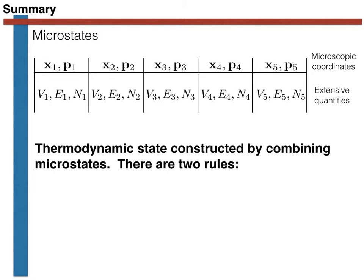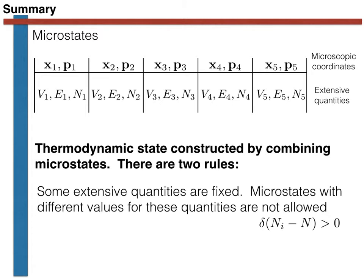We can write this type of constraint mathematically using a delta function as shown here. We are constraining the delta function to be greater than zero, which is only true when n_i — the value of n for microstate i — is equal to the number of atoms we require, capital N.